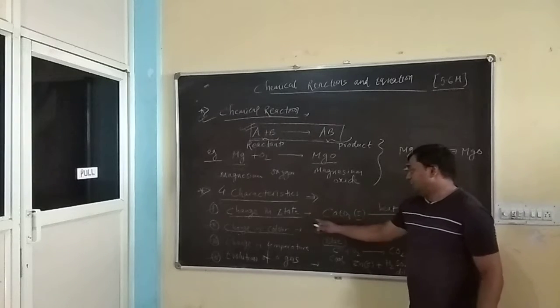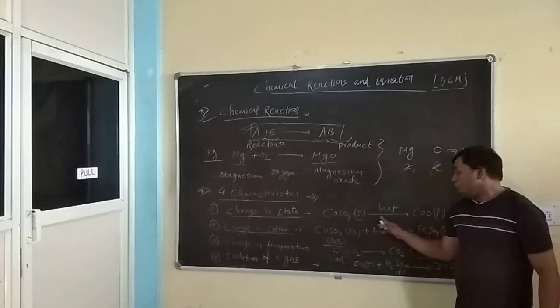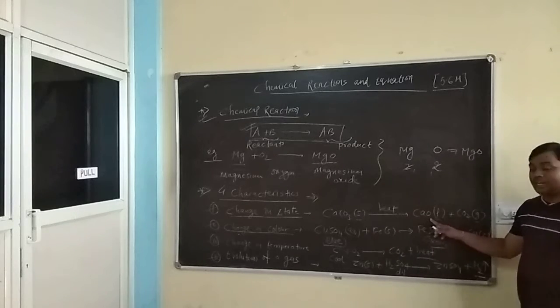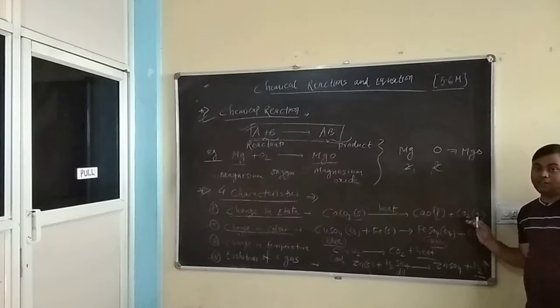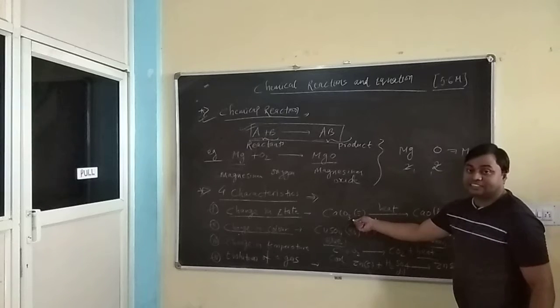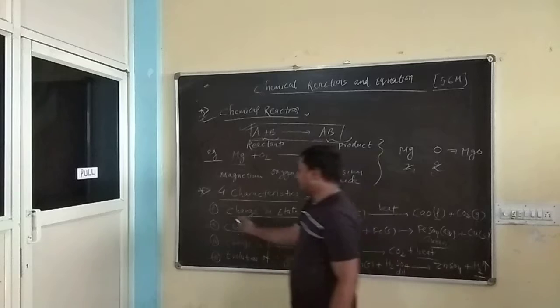For example change in state. I have taken the example calcium carbonate which is in solid state. On heating it gives you calcium oxide CaO plus CO2 which are in liquid and gas state respectively. So here we can clearly see there is a change in state from solid to liquid and gas. So this is a chemical reaction.